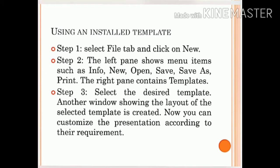A blank presentation can also be created using an installed template. Step 1: Select the File tab and click New. The left pane shows menu items such as information, new, open, save, save as, and print. The right pane contains templates. Step 3: Select the desired template. Another window shows the layout of the selected template. Now you can customize the presentation according to your requirements.